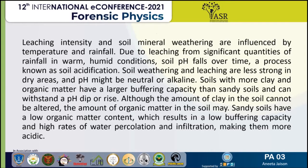Leaching strength and soil minerals are influenced by temperature and rainfall. Soil acidification occurs when leaching from significant quantities of rainfall in warm and humid conditions causes soil pH to fall over time. Soil with more clay and organic matter has a large buffering capacity. The amount of clay in soil cannot be changed, but the amount of organic material in soil can be changed. Sandy soil has low organic material, which results in low buffering capacity.